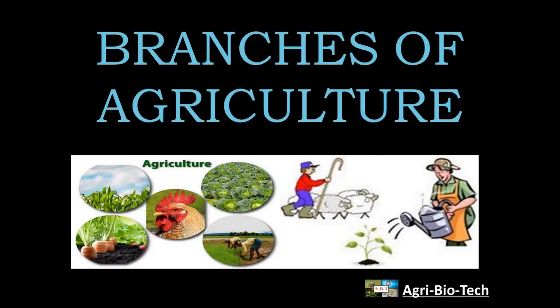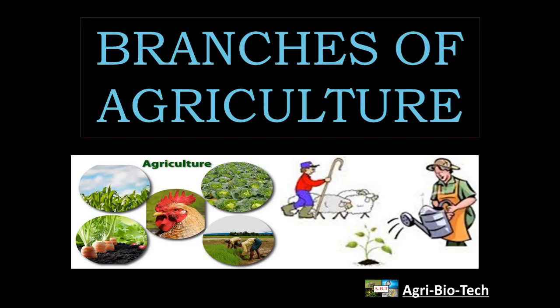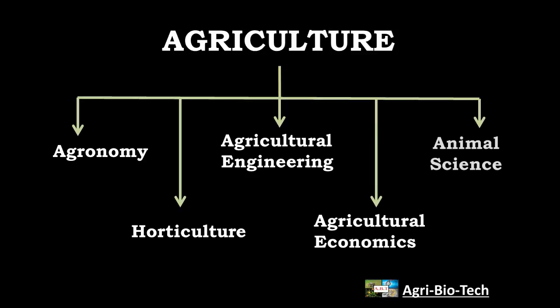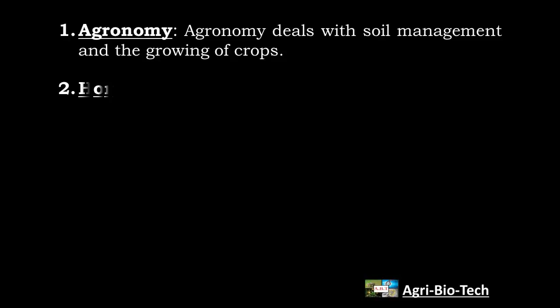Branches of Agriculture: Agriculture is composed of five specialised branches. The five branches are Agronomy, Horticulture, Agricultural Engineering, Agricultural Economics, and Animal Science. First one, Agronomy: Agronomy deals with soil management and the growing of crops. It is the application of a combination of sciences like biology, chemistry, economics, ecology, earth science, and genetics.